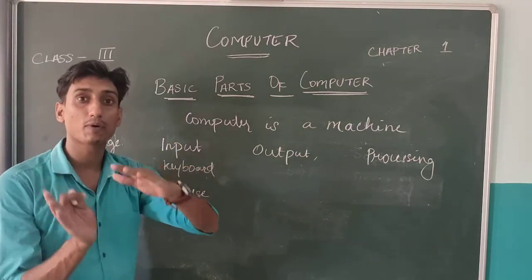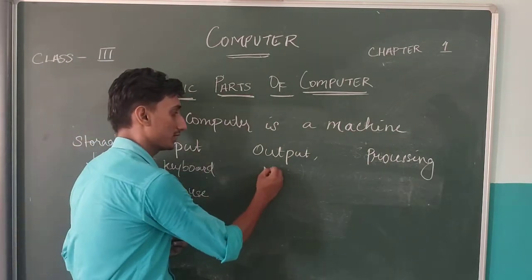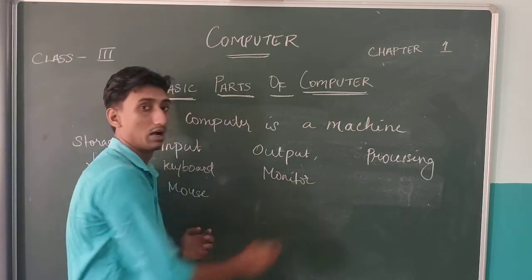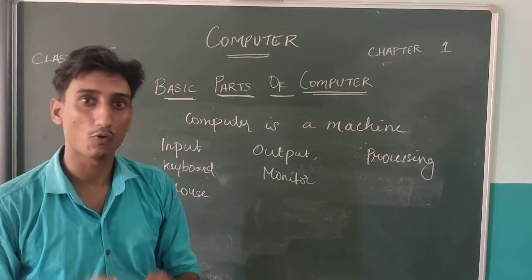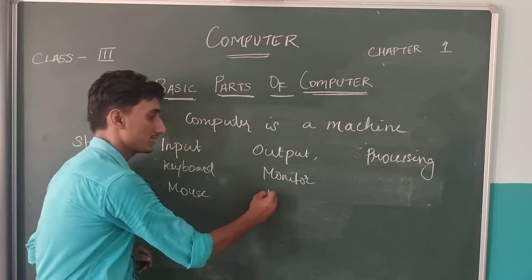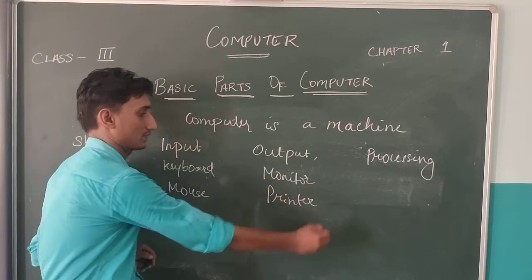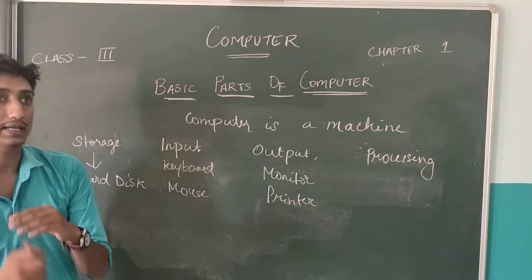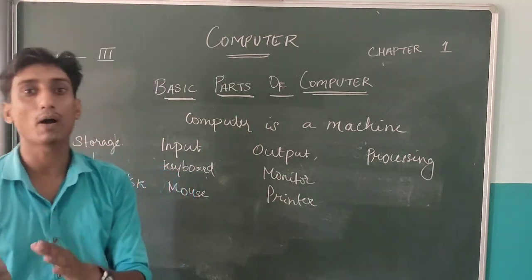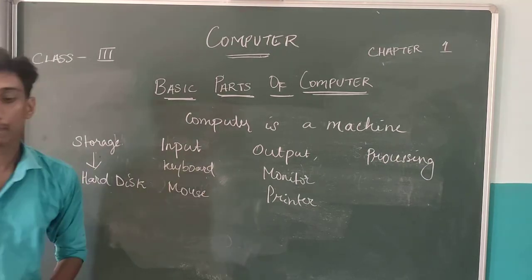Output is what you can see outside the computer, such as your monitor display. A printer is also an output device.